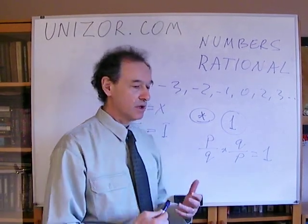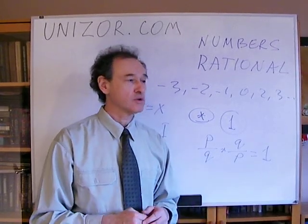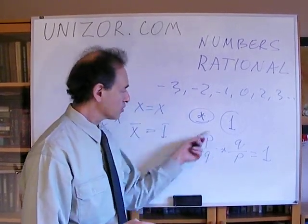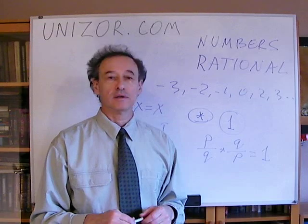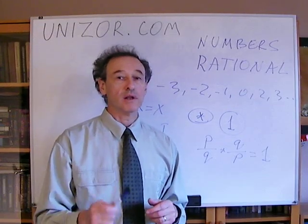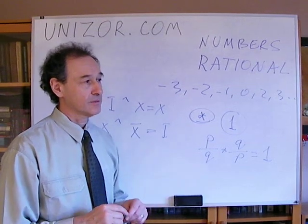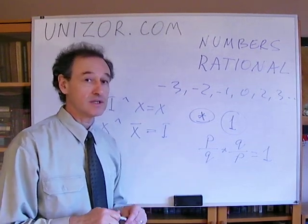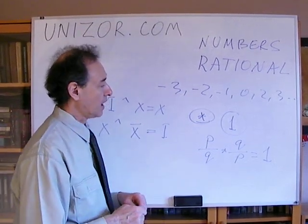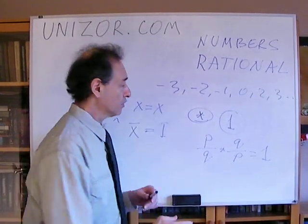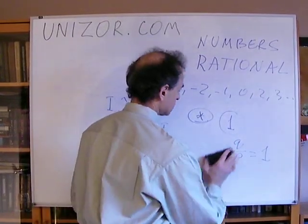We are introducing new numbers, we call it rational. We have notation, how to write them, and the necessity was to make the multiplication complete. Now, just as a kind of interesting example of how the whole theory was developed a little bit further, let's consider the notation.